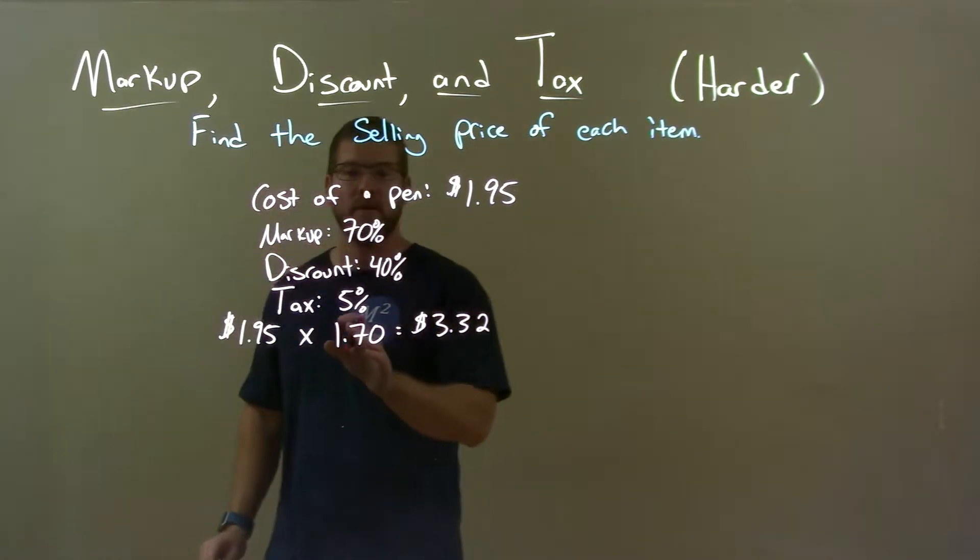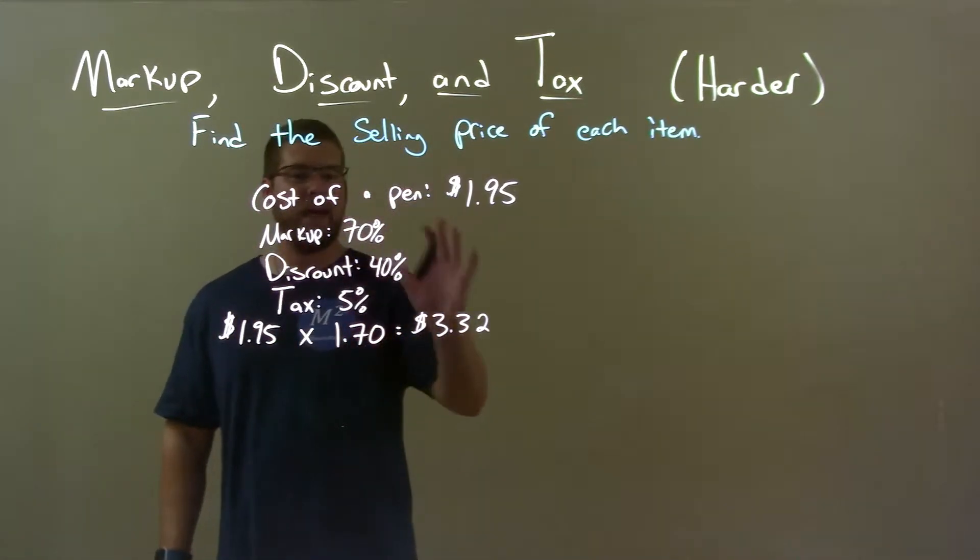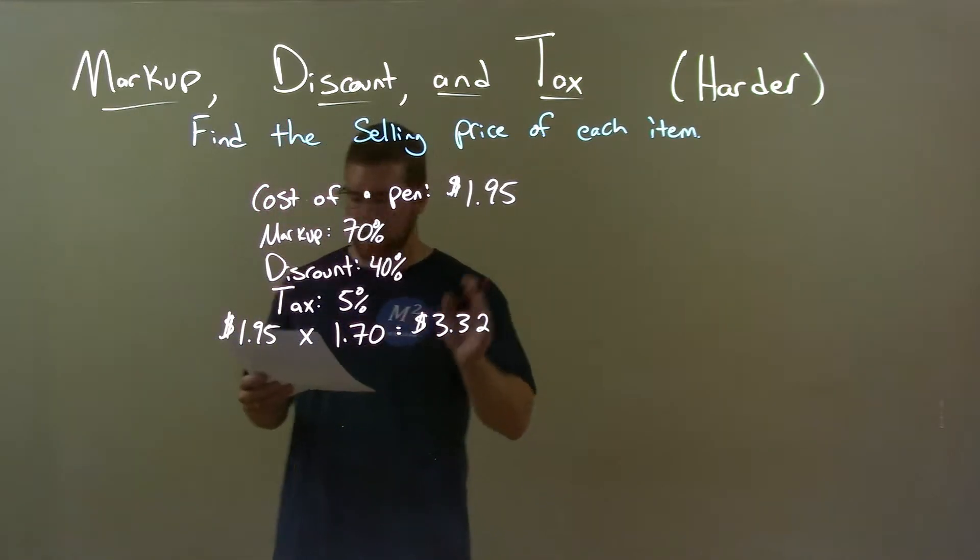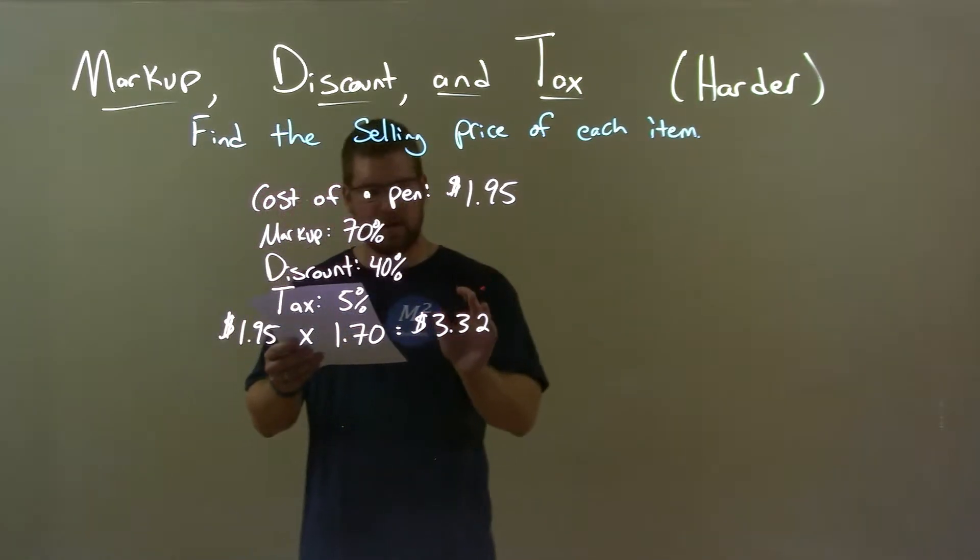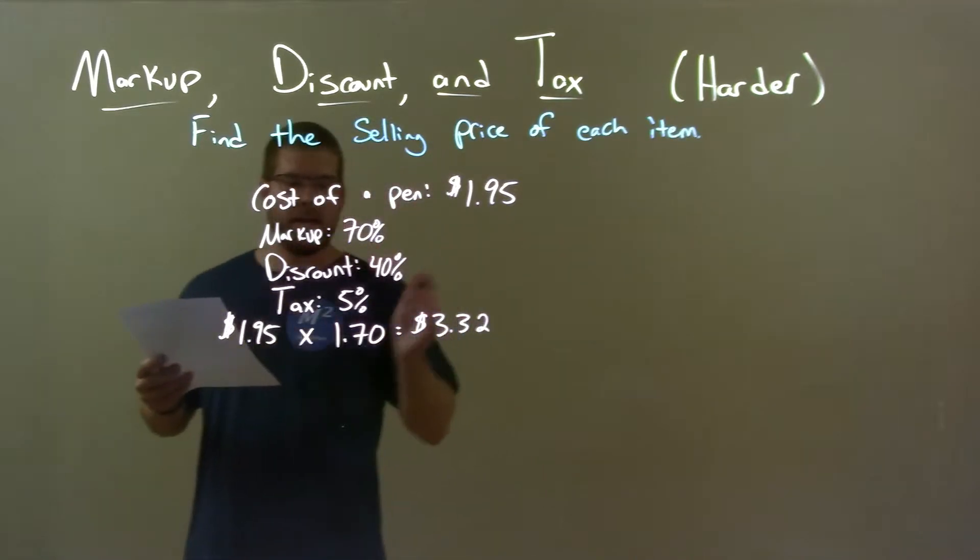That one is very important. That allows us to keep the pen and then include that 70% markup. So, $3.32 is the cost after the markup. Now, we gotta apply the discount.